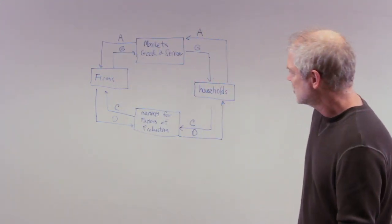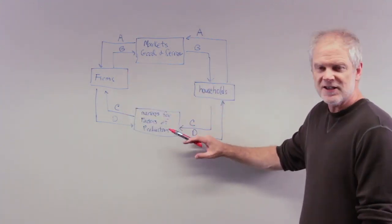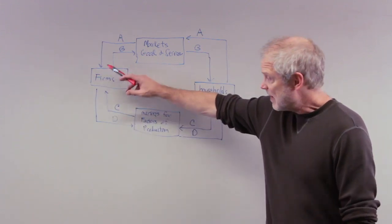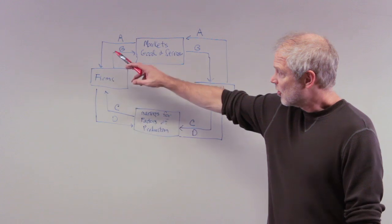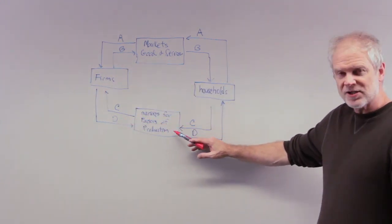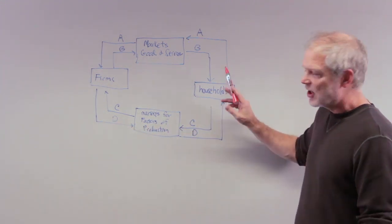Which arrow represents the flow of income payments? Income payments—well, firms have to buy these factors of production. How do they do it? They pay wages, they pay interest on money they borrow, or they pay rent on land that they rent. So firms make payments to the factors of production, so D represents that flow because it goes into the households.